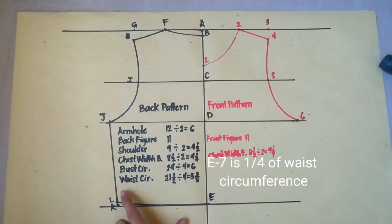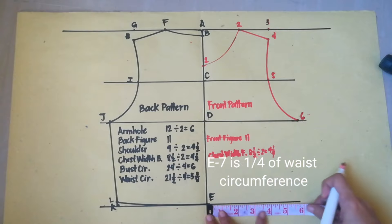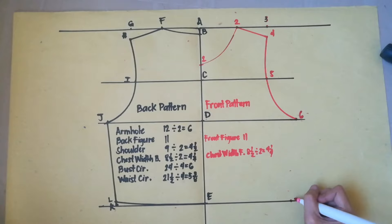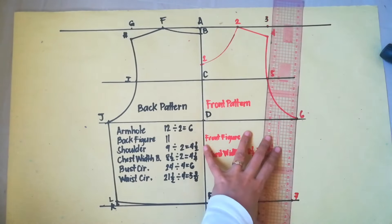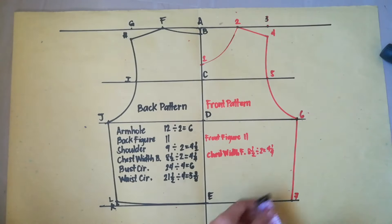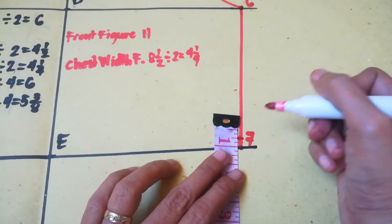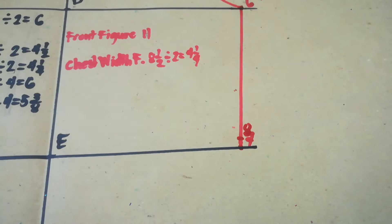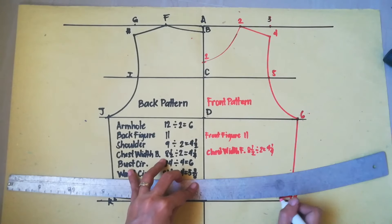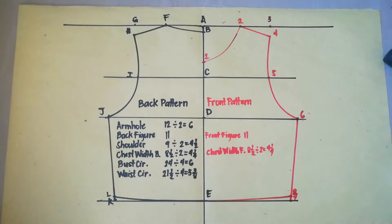E to 7 is 1 fourth of bass circumference. So, it is 5 and 3 eighths. So, it is 5 and 3 eighths, point 7. Connect 6 and 7 with ruler. Point 7 to 8 is also 1 fourth of an inch.